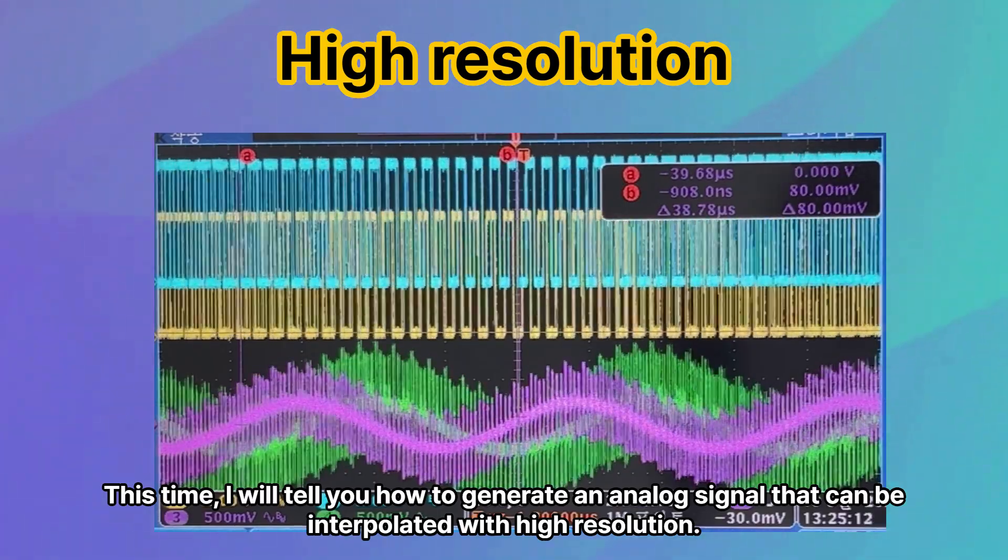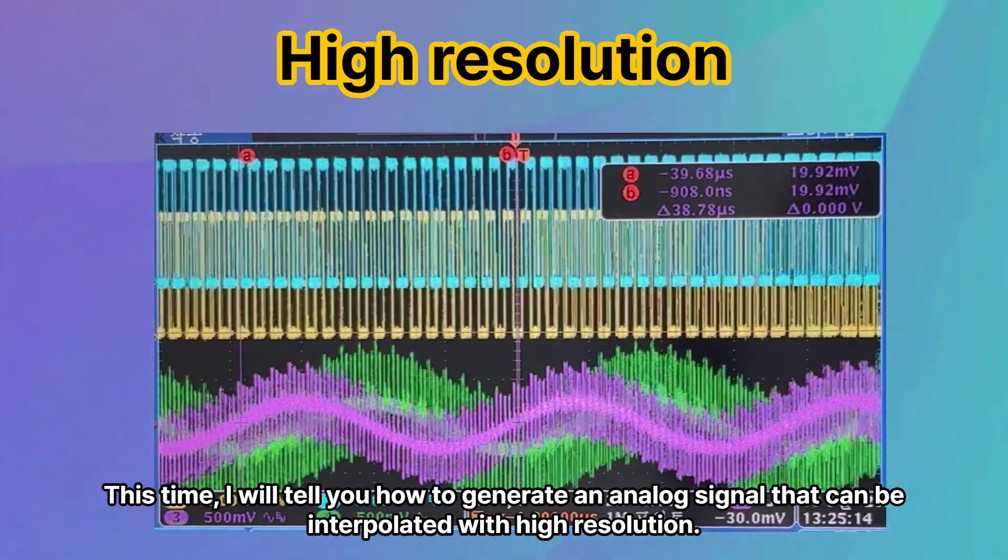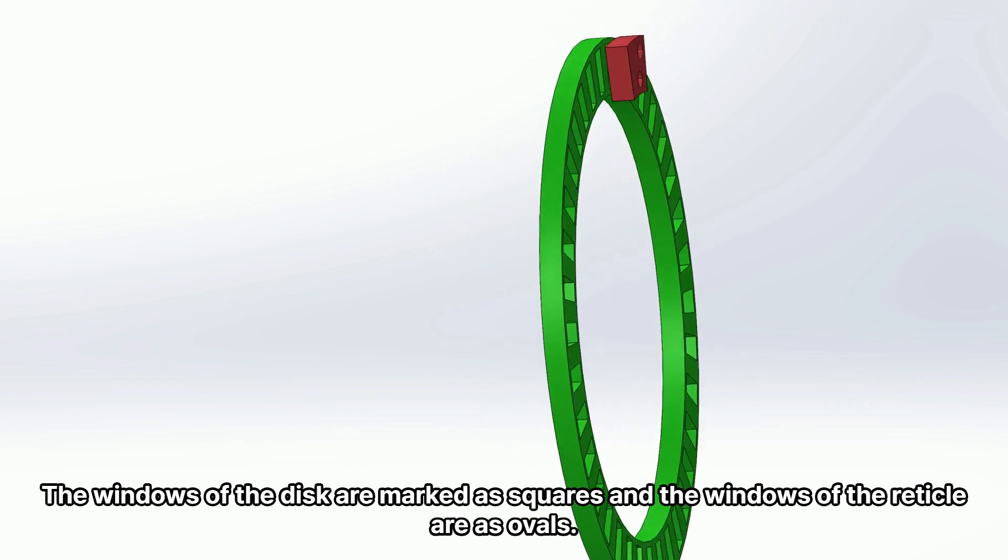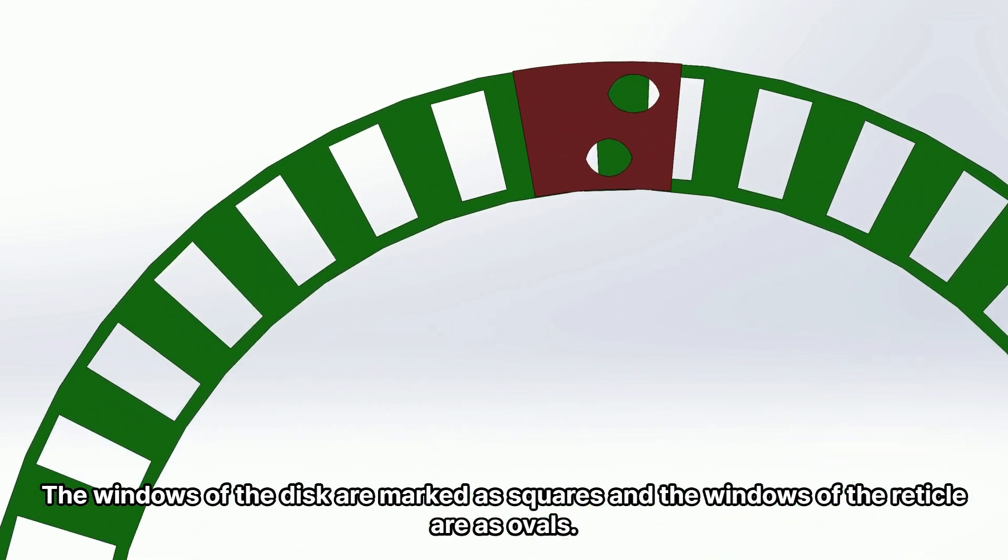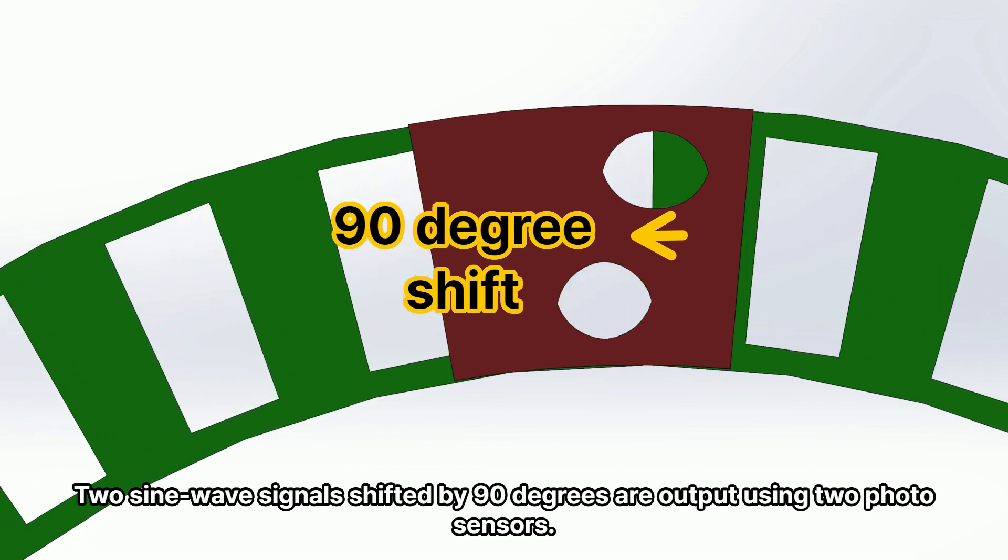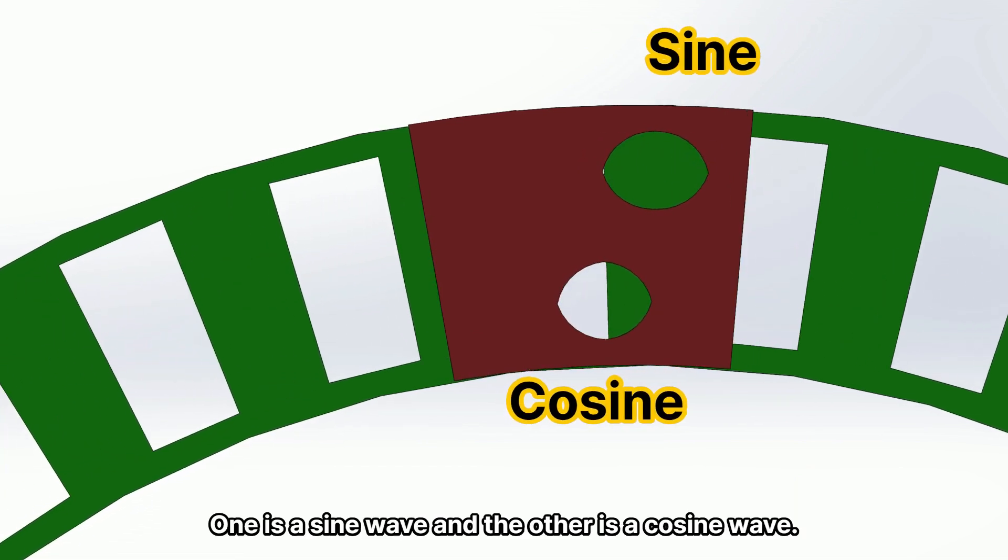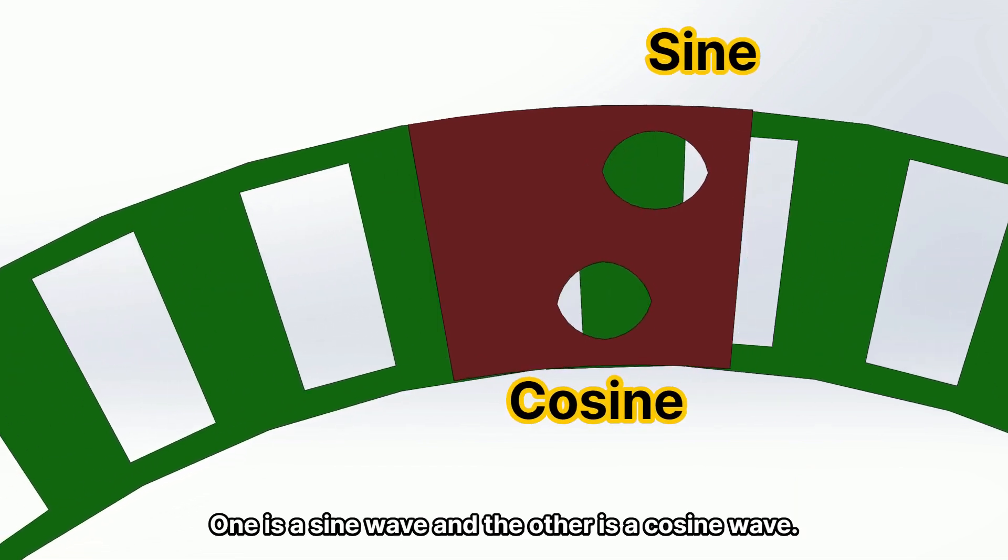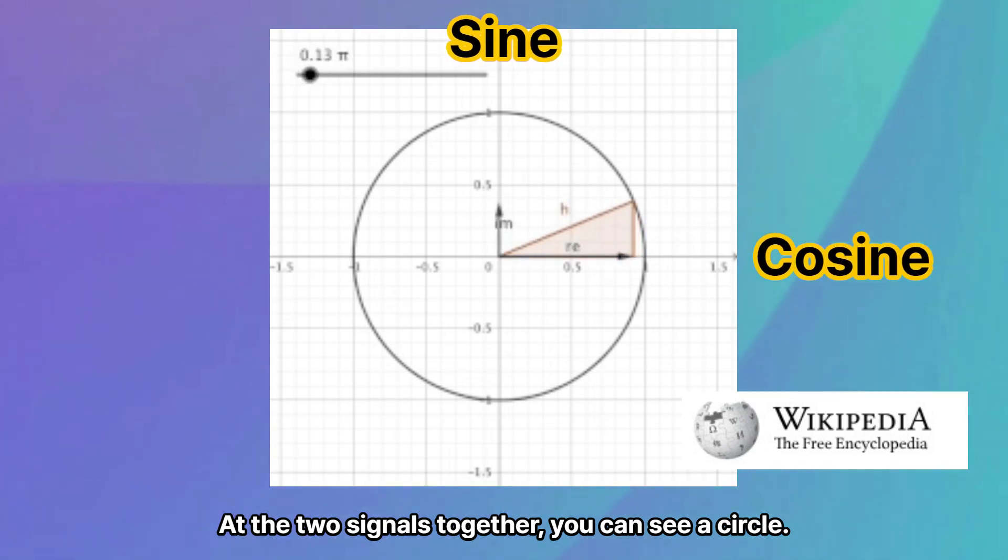This time, I will tell you how to generate an analog signal that can be interpolated with high resolution. The windows of the disk are marked as squares and the windows of the reticle are as ovals. Two sine wave signals shifted by 90 degrees are output using two photosensors. One is a sine wave and the other is a cosine wave. At the two signals together, you can see a circle.